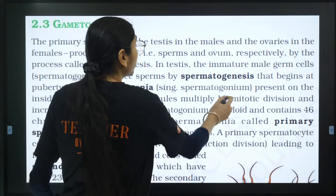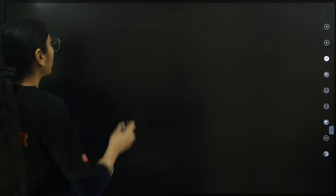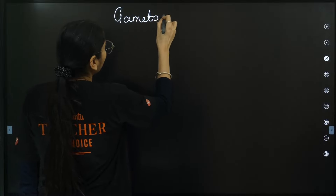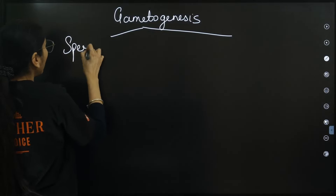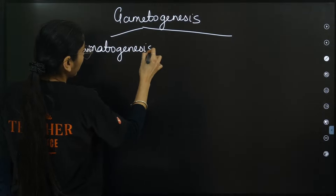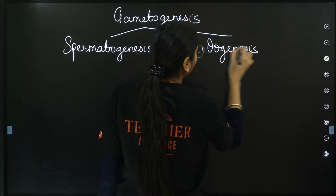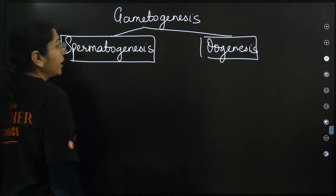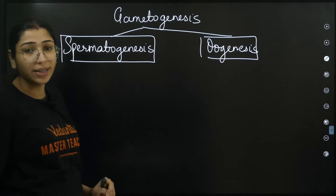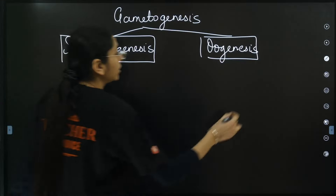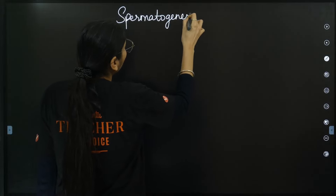Now let's start gametogenesis. Genesis means formation of gametes. In males the process is called spermatogenesis - formation of sperms - and in females it is called oogenesis - formation of ovum. Let's talk about spermatogenesis first. Spermatogenesis takes place in the seminiferous tubules of the testis. Inside the seminiferous tubules are special cells called male germ cells, more particularly called spermatogonia, which are diploid cells that will ultimately result in sperm formation.